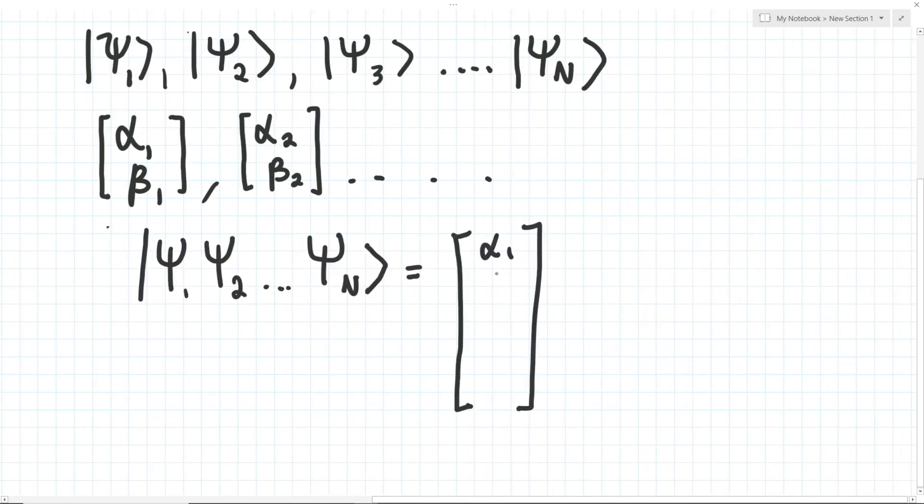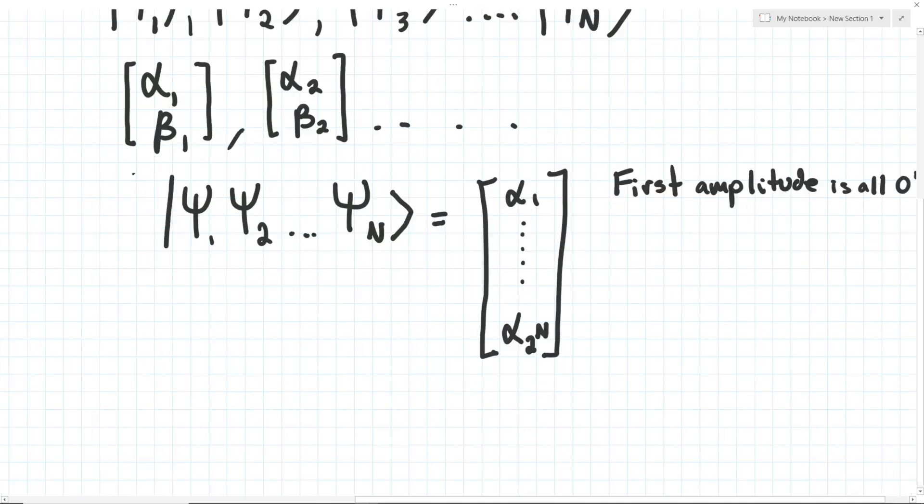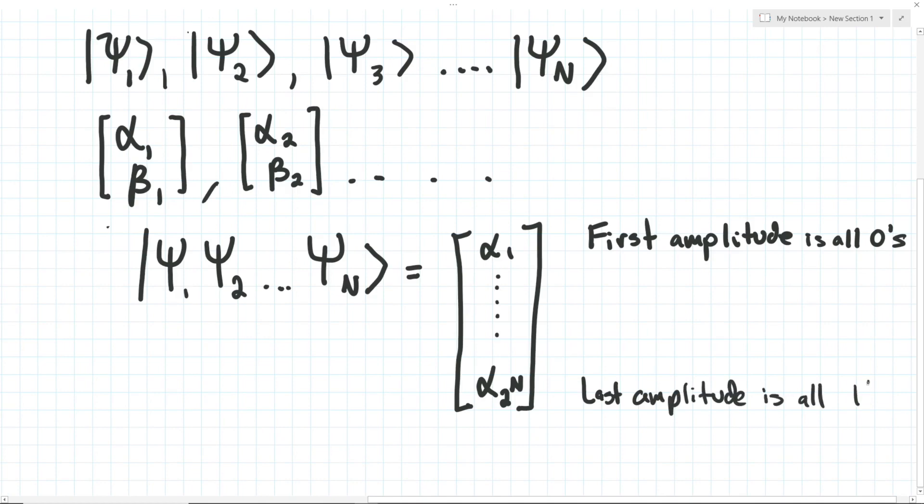If we have n qubits, the tensor product of the respective state vector will combine into a vector of length 2 to the n. Each entry will be the amplitude of the state starting from all zeros all the way to the state of all ones. Another way of thinking about this is that each amplitude is related to measuring some binary number between 0 and 2 to the n minus 1, counting up as we go down the vector.